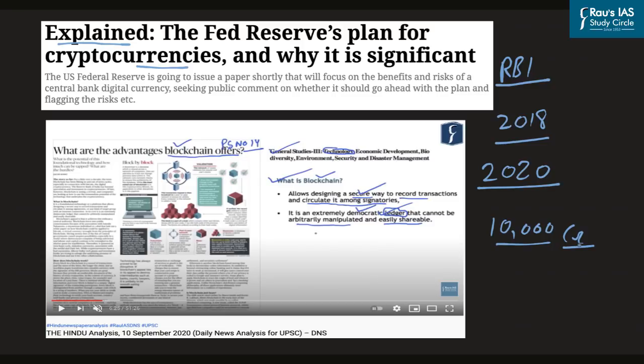Central banks of various countries are now issuing what are called central bank digital currencies. China is one of the major economies that introduced central bank digital currency back in 2020. Central banks are issuing these digital currencies out of fear of cryptocurrencies and are likely to deploy blockchain technology. Key questions arise: how is CBDC different from regular cash or existing digital payments, and is it the same as cryptocurrency?